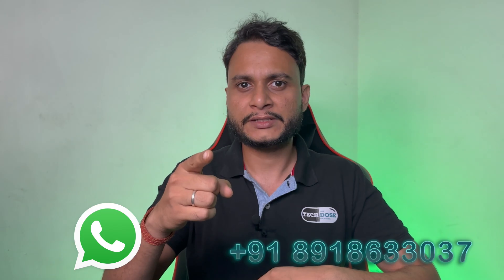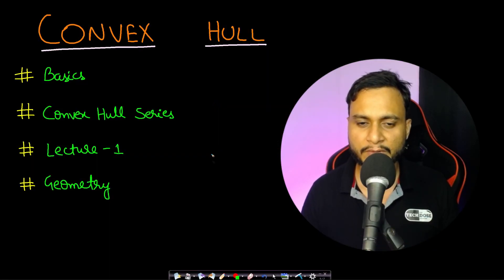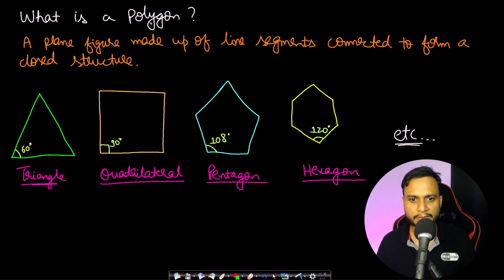So let us see the basics one by one. The first problem is what is a polygon. Most of you must be knowing this, but just for the purpose of definition, a plane figure made up of line segments connected to form a closed structure is defined as a polygon. So a triangle is a polygon, quadrilateral, pentagon, hexagon, and you can have many more sides to a polygon.